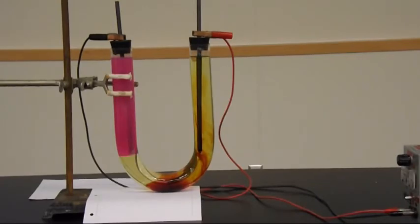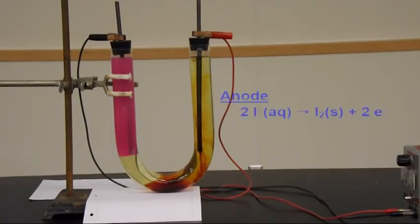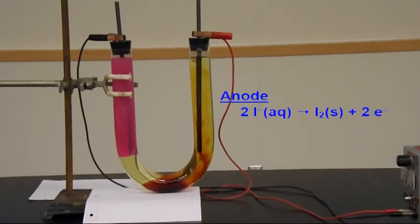On one of the cells, we clearly have I minus reacting to produce I2. And that would be with plus two electrons. The cell potential for that reaction is 0.536. Right there.